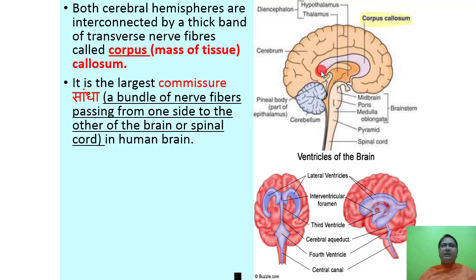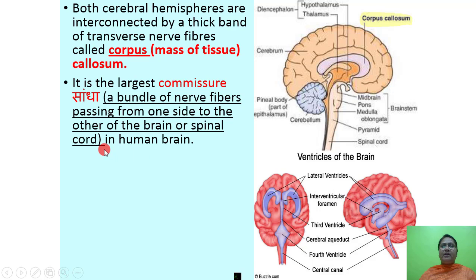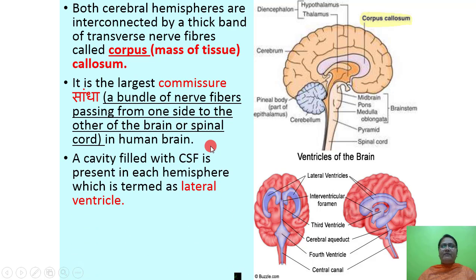Both cerebral hemispheres are interconnected by a thick band of transverse nerve fibers called the corpus callosum. It is the largest commissure — a bundle of nerve fibers passing from one side to another — in the human brain. A cavity filled with cerebrospinal fluid (CSF) is present in each hemisphere, termed the lateral ventricle.